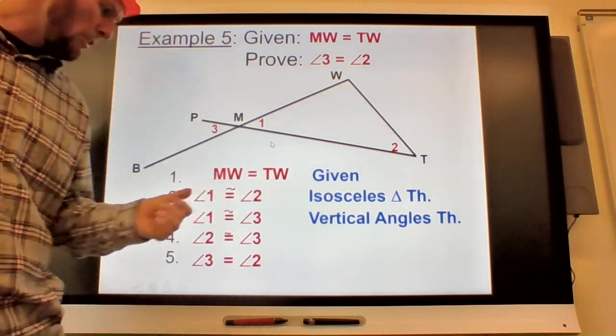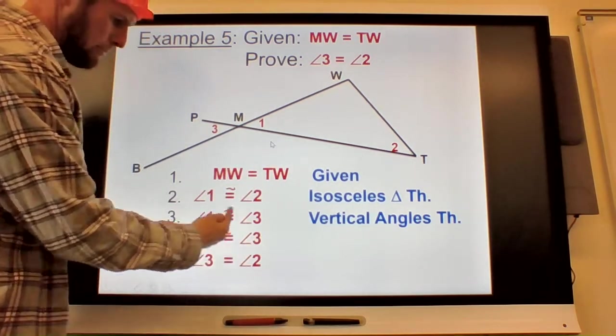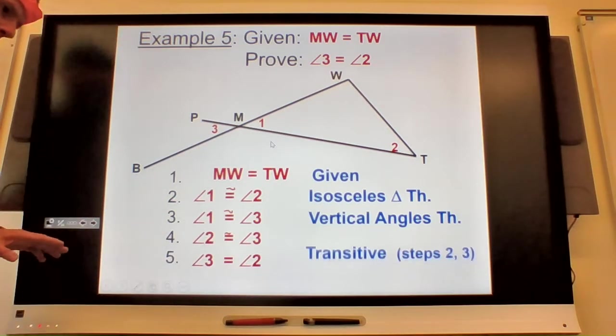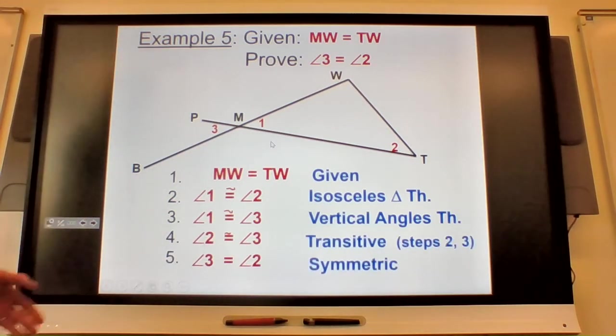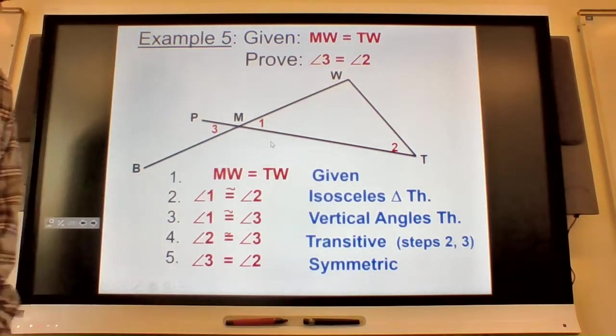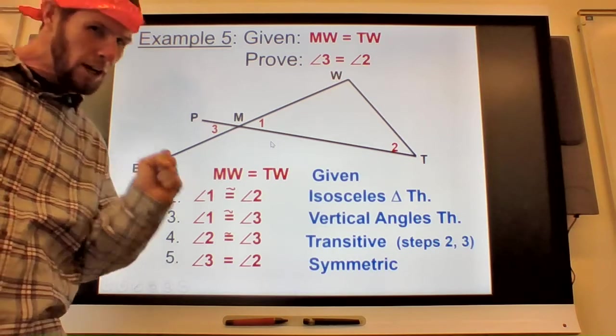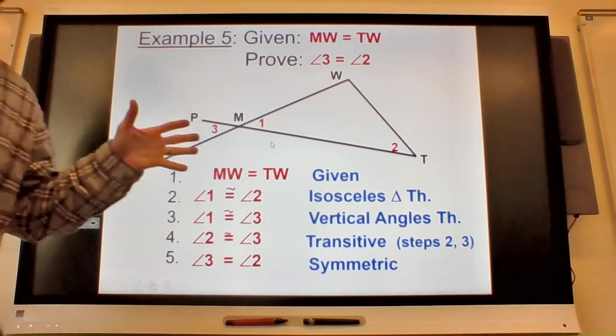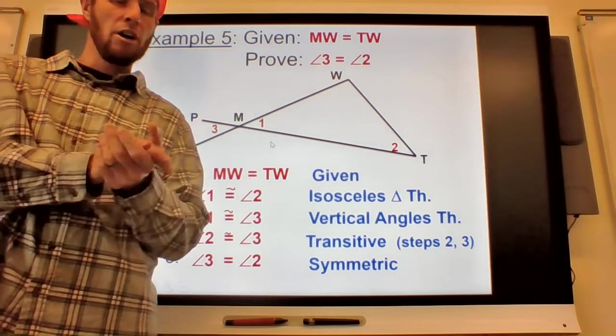And again, you could make that a congruent sign if you wanted to. Classic example of transitive property. You certainly could call it substitution. Just to review it, I added a fifth step in there. You can see what I did. And if you remember, what's it called when you switch the equation around? That's called the symmetric property. Certainly you don't have to have that. If you set it up exactly like that at the end, I just want to make sure I get every chance I can to review key terms on there.